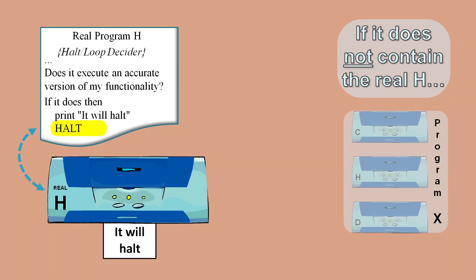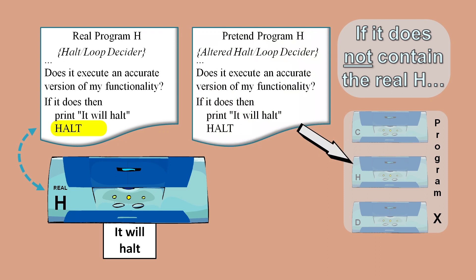And so in order to prevent that machine halt happening, we would need to use an altered copy of Program H inside Program X that we'll call pretend Program H. And to ensure that we can continue processing after this pretend Program H, we would need to get rid of any machine level halt instructions. We would need to change them to some type of instruction or instructions that would return control to Program X.